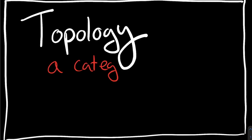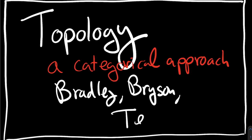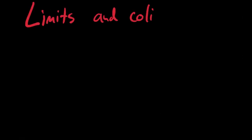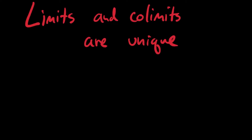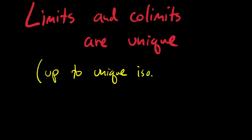Hi, everyone. I'm John Turilla, one of the authors of Topology: A Categorical Approach. In this video, I'm going to talk about limits and co-limits, and in particular, I'm going to prove that limits and co-limits are unique, meaning unique up to unique isomorphism.